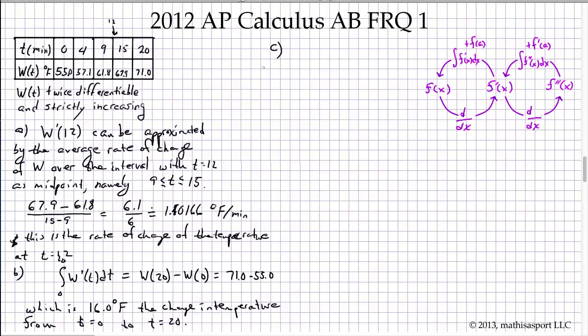All right, on to part c. They tell us the average water temperature of the water in the tub is given by this expression, and ask us to approximate it using left Riemann sums. So left Riemann sum means they ask for four left Riemann sums using the data that we have. So this will be our first rectangle with a width of 4, and we use the left most height for the height of our rectangle.